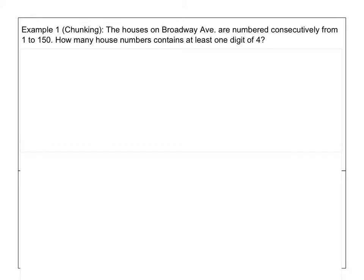Here's an example. The houses on Broadway Avenue are numbered consecutively from 1 to 150. How many house numbers contains at least one digit of 4? Let's try to understand what this problem is asking of you. So we have a street that has houses, and the houses have house numbers from 1 to 150. Before we start working on this problem, let's think of some possible house numbers that contain at least one digit of 4.